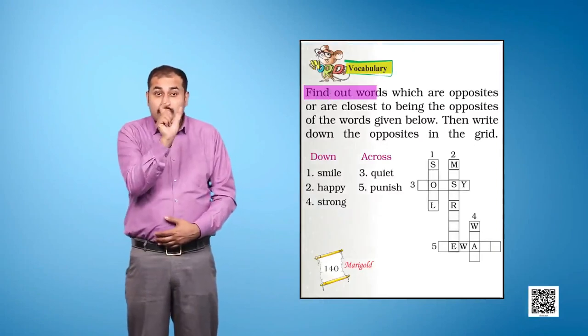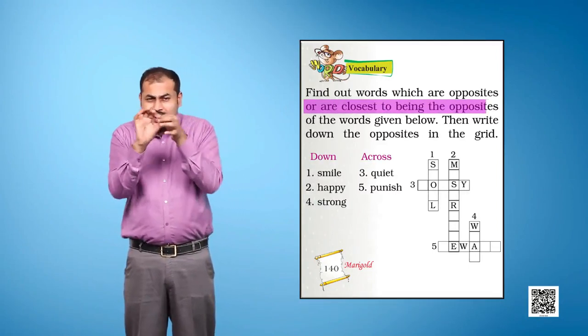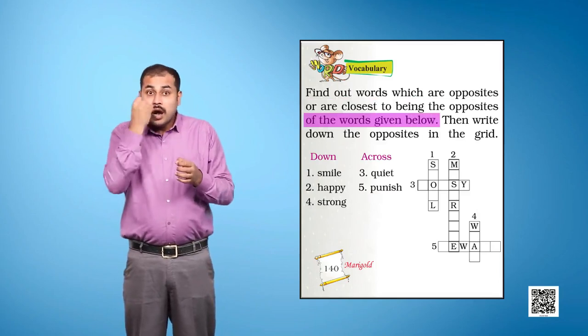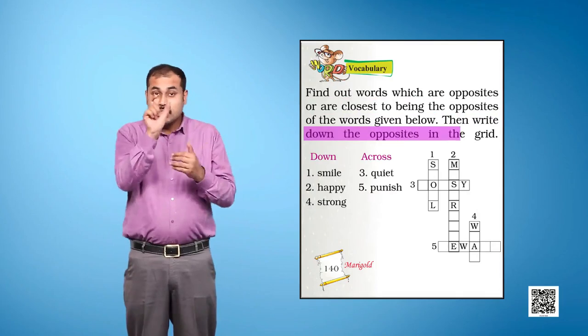Find out words which are opposites or are closest to being the opposites of the words given below. Then write down the opposites in the grid.